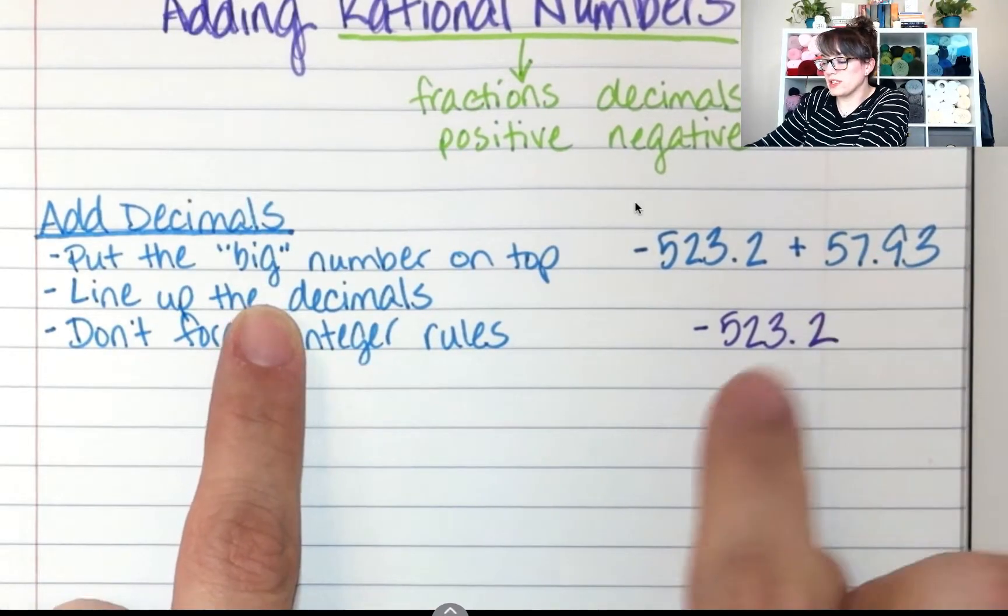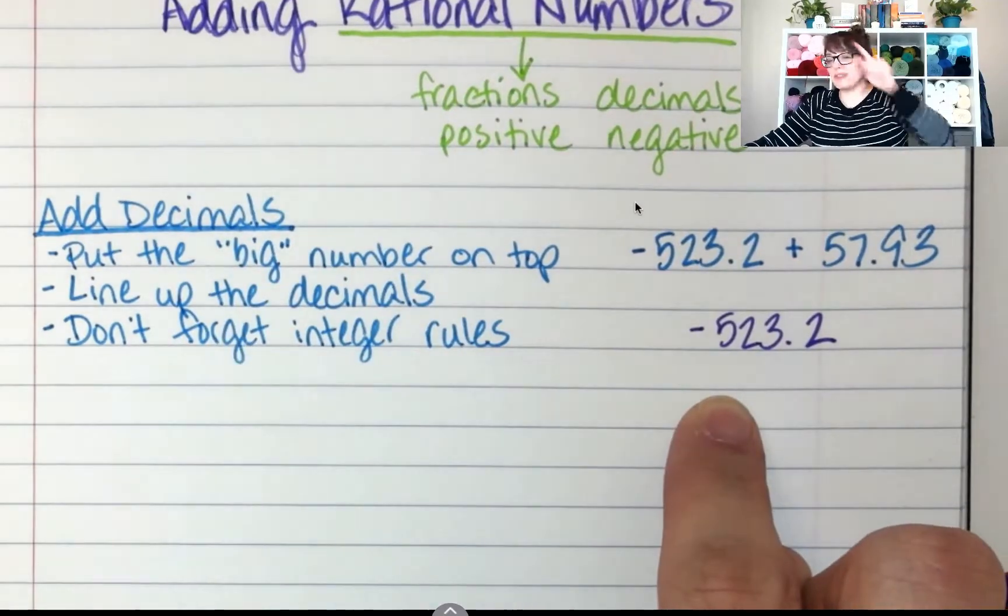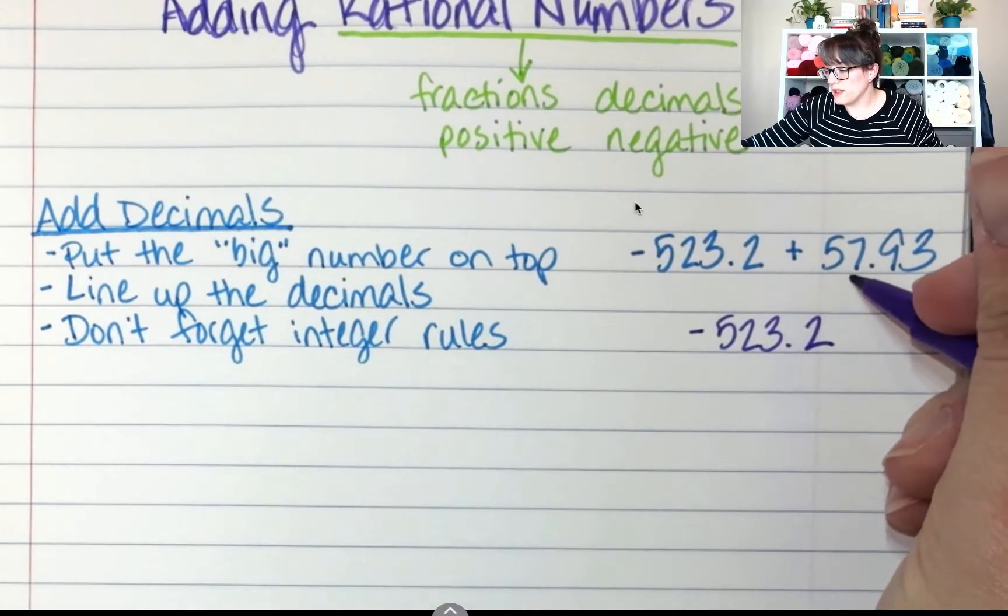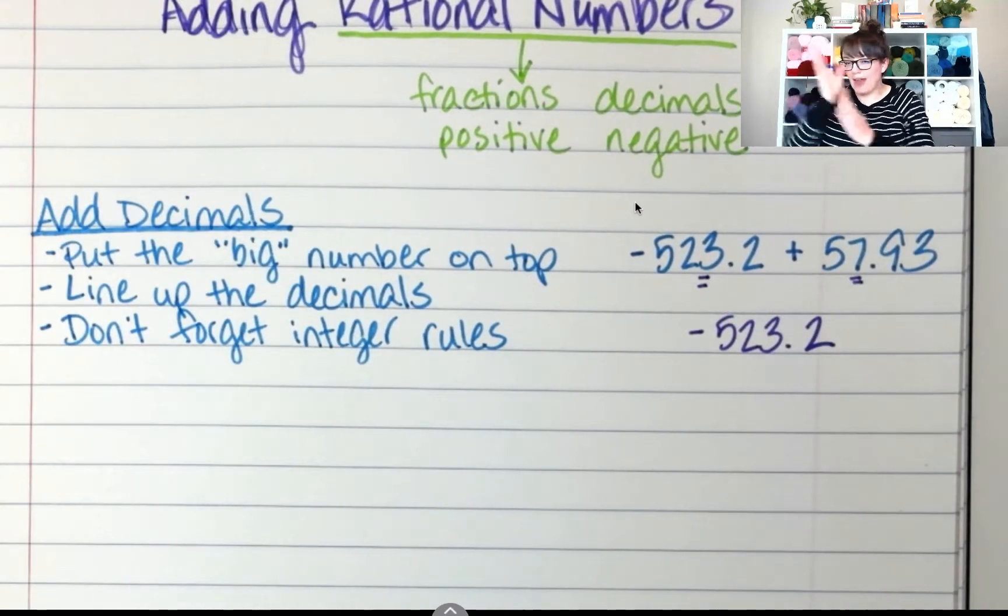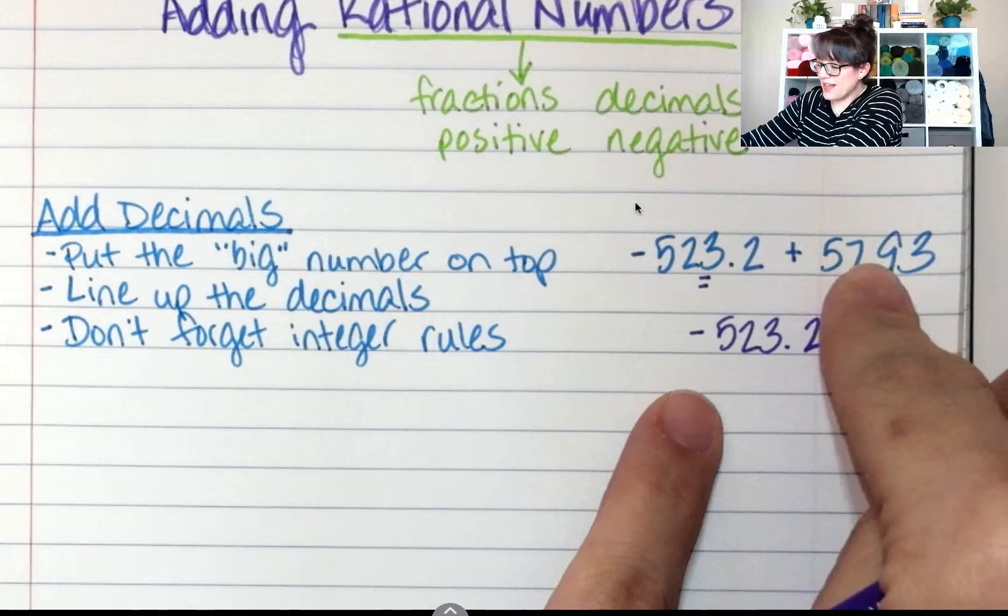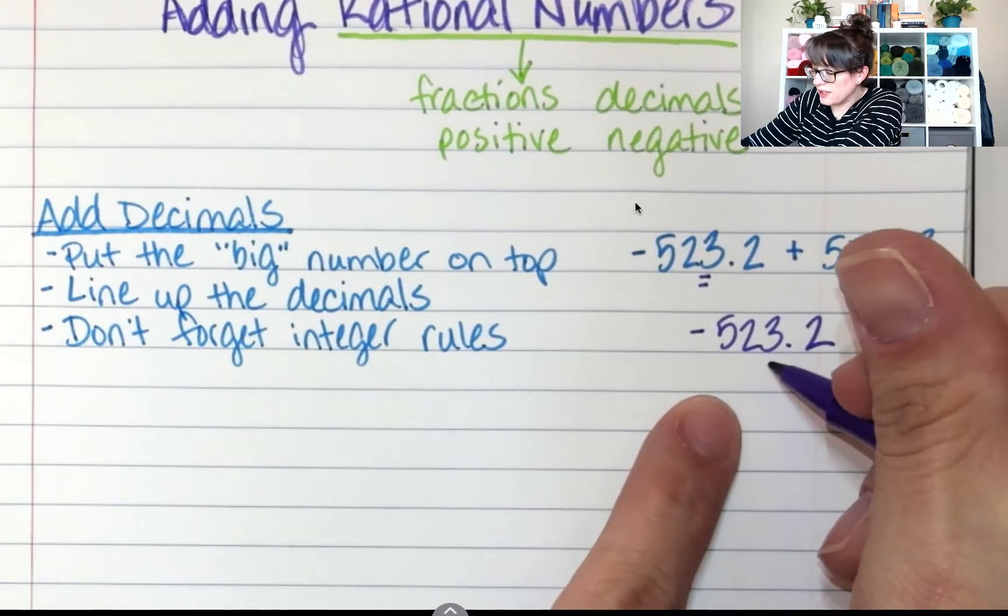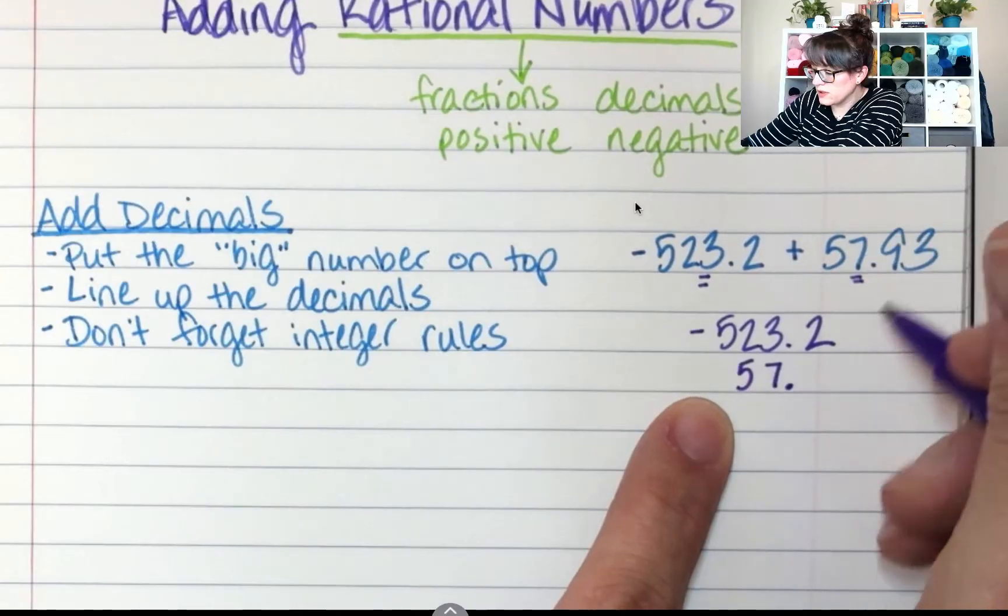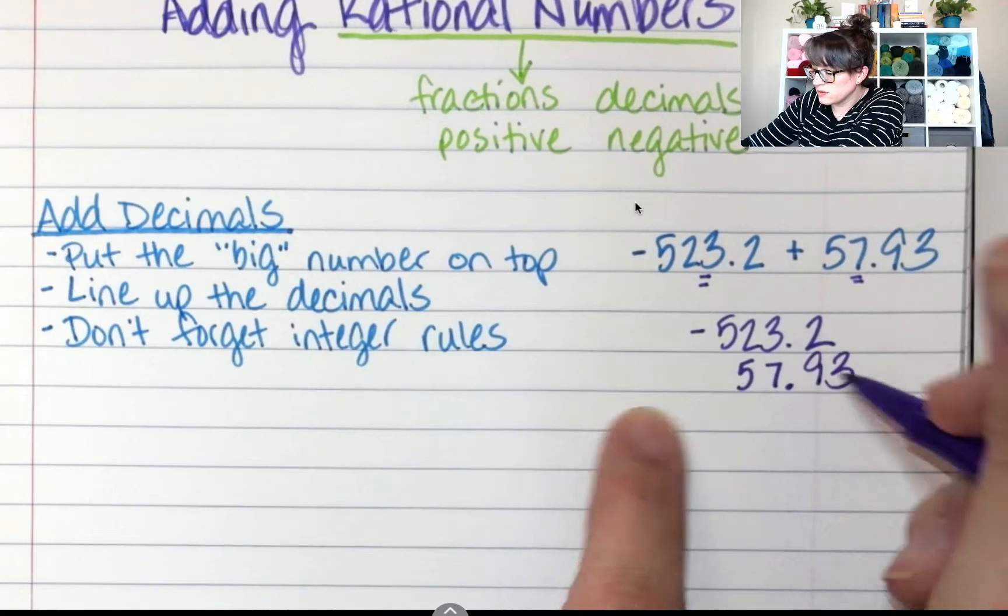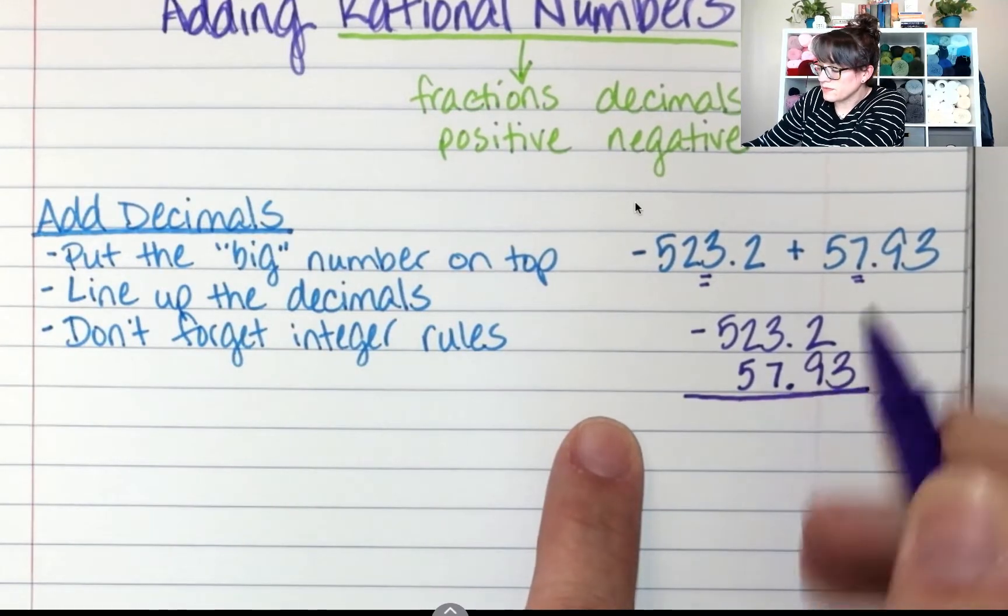So this one is going to go on the bottom. But we have to line up those decimals. So if this is the ones place, this is the ones place. And they have to match. So this 7 has to go underneath that 3. And that decimal has to go under that decimal. And I'm adding.